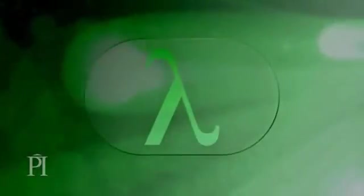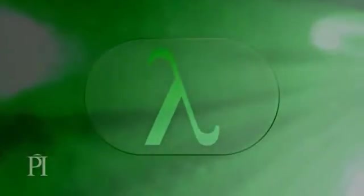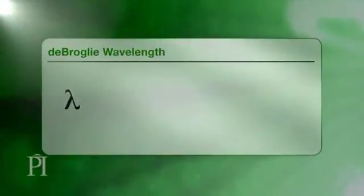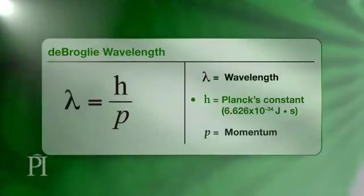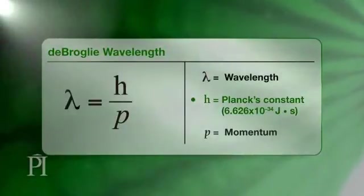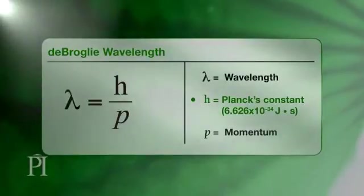Since it behaves like a wave, an electron has a wavelength. This wavelength is called the de Broglie wavelength. It's related to the electron's momentum by this equation. The symbol h is a universal constant with an incredibly small value. It's called Planck's constant, after German physicist Max Planck, who discovered it in 1900.